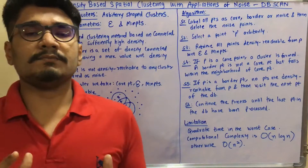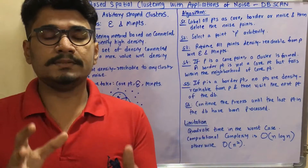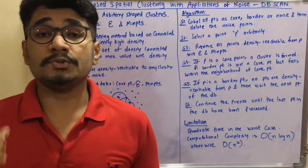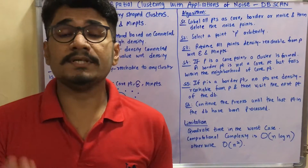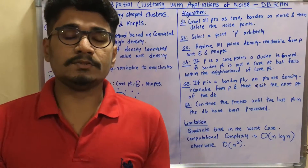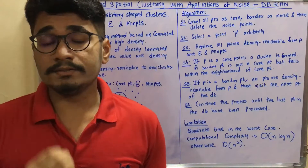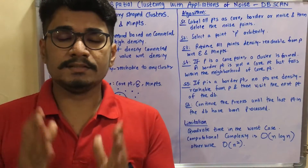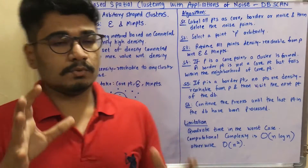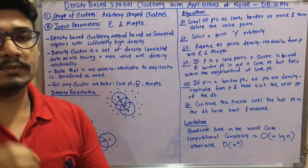The density-based method works by separating low density and high density data point regions. It is mainly used to find arbitrary shaped clusters, and identifies these clusters with the help of thresholds or terminating conditions. Using different parameters makes it easier to handle noise as well as outliers. It finds density parameters distributed across the data points in the clustering.